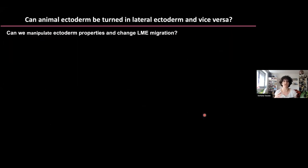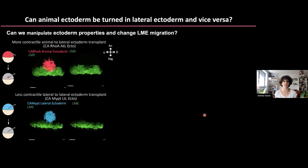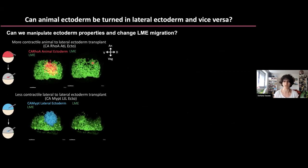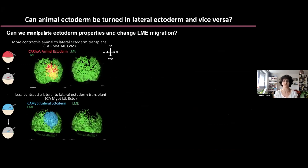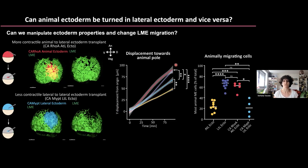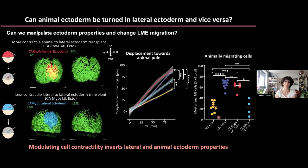But if that's true, can we modulate lateral mesendoderm migration by simply modulating tissue properties? We tested this by modulating cell contractility — increasing contractility in the animal ectoderm or decreasing it in the lateral ectoderm before transplantation, and then observing migration. Cells migrate normally when they encounter animal ectoderm with higher contractility, but have trouble moving animally when they encounter less contractile lateral ectoderm. The quantification shows it is enough to modulate contractility to fully invert the ectoderm's properties in modulating lateral mesendoderm migration.